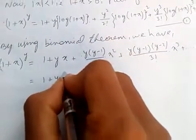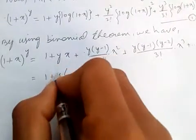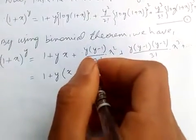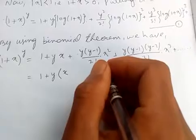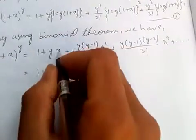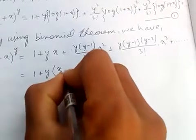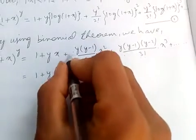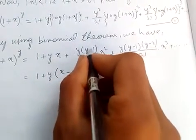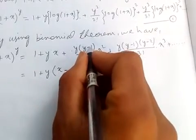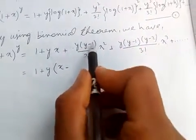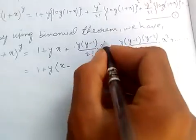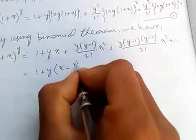We can see that y is common in this expansion, so let's take y as a common factor. Taking y out, the first term is x, and the next term splits into two parts: y by 2 factorial times x squared, and minus one by 2 factorial times x squared, giving minus x squared by 2 factorial.